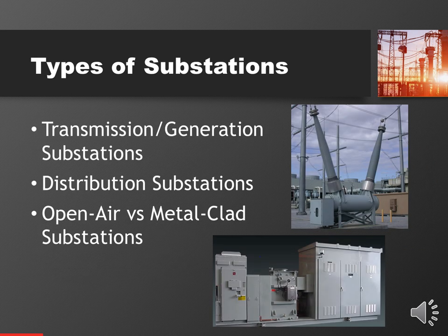The various types of substations: at the top of the food chain are transmission or generation substations. Transmission voltages typically start at 69 kV and in the U.S. go all the way up to 765,000-volt systems. The top picture on the slide is a 500,000-volt gas circuit breaker, used for ultra-high or extra-high voltage transmission systems. This normally doesn't relate to many Grace customers, although wind farms and solar farms absolutely have transmission-type substations associated with them.